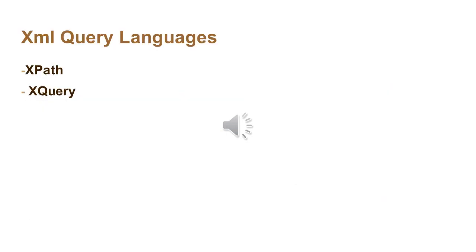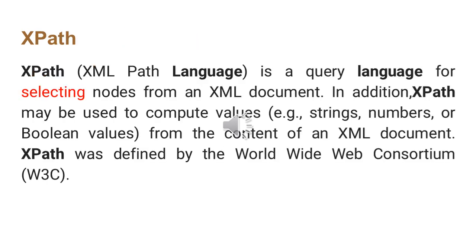Let's see about XML query languages. We are going to look at XPath and XQuery. XPath is a query language for selecting nodes from an XML document. In addition, XPath may be used to compute values — for example, strings, numbers, or Boolean values — from the content of an XML document. XPath was defined by the World Wide Web Consortium, that is, W3C.